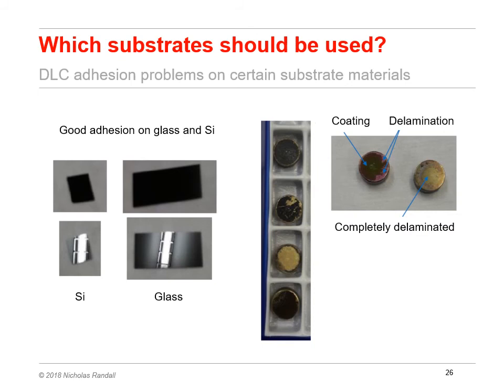Here we see a modern diamond-like carbon coating developed to reduce friction and wear. Although the coating performs incredibly well, we may still have issues with the adhesion of the coating on certain substrates. Here we see good adhesion on silicon or glass, but poor adhesion on the brass surface to be used in our industrial application. So developing a great coating only works if you're able to apply it to the surface of interest, so that it becomes an integral component that can extend the overall lifetime.